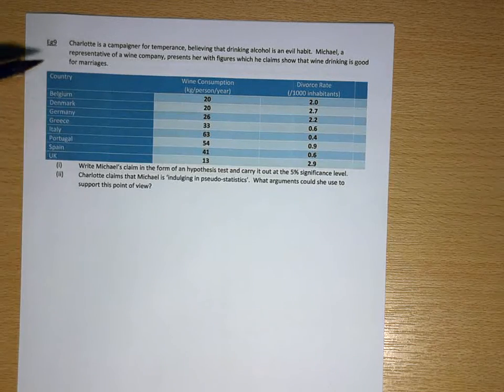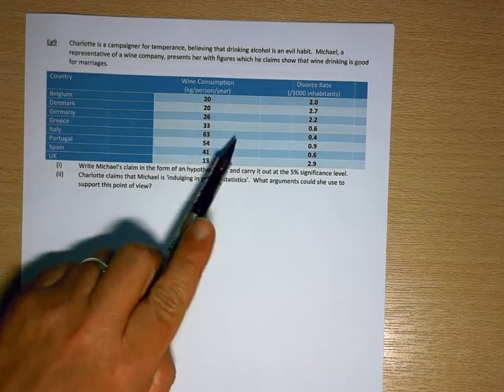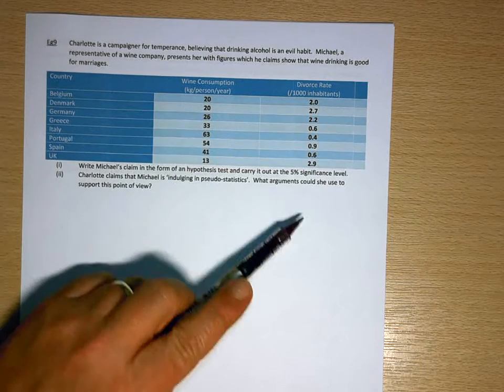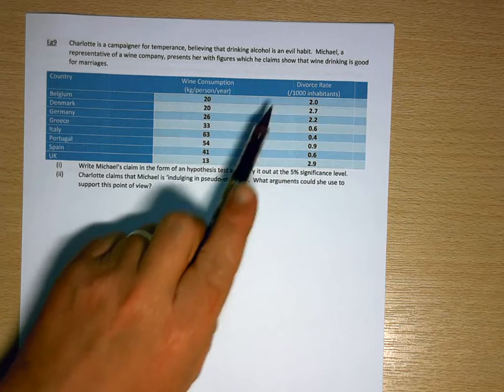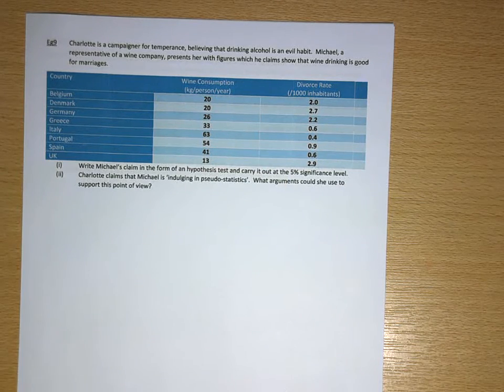here of different countries in Europe and the average wine consumption in kilograms per person per year, and also the divorce rate per 1,000 inhabitants.